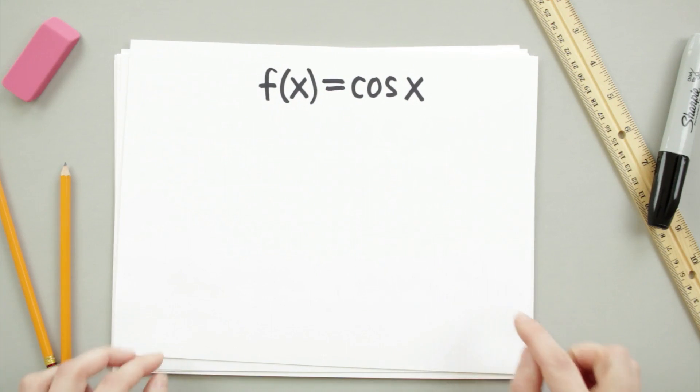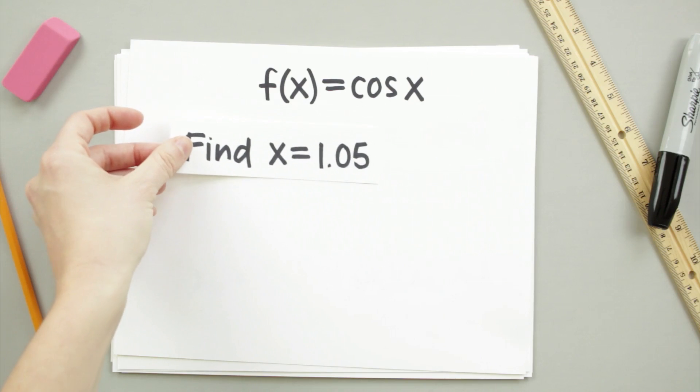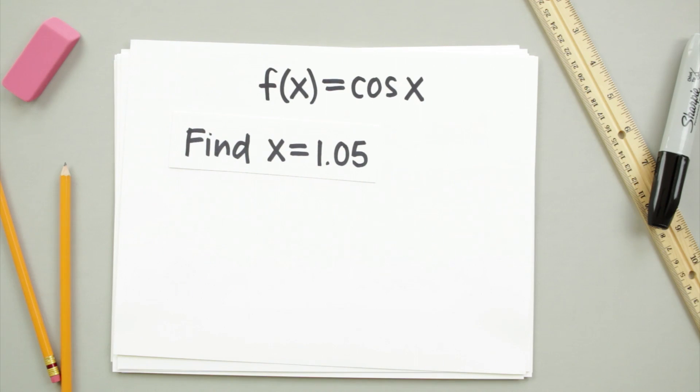Let's take a look at another example where we can use linear approximation. Given the function f(x) equals cosine of x, we want to find a linear approximation for x equals 1.05, which happens to be pretty close to pi over 3.